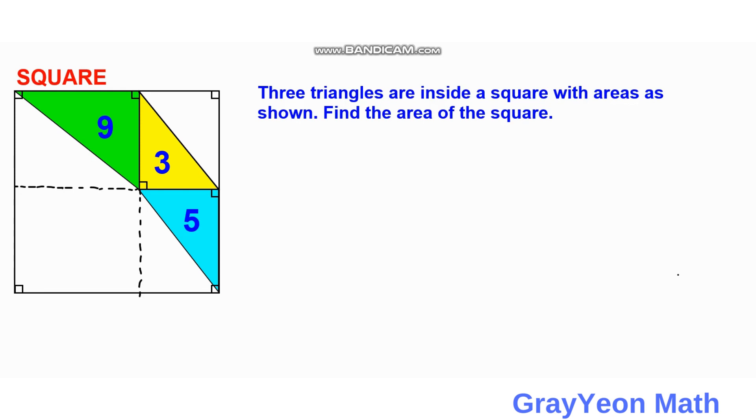If we consider this green triangle, then if that has an area of 9, then since that is a rectangle, then this should be 3. Then we have here an unknown area. And for this blue triangle we can say that this is also 5. And for this yellow triangle, since that is also a rectangle, then this should be 3. Then we have here an unknown area.